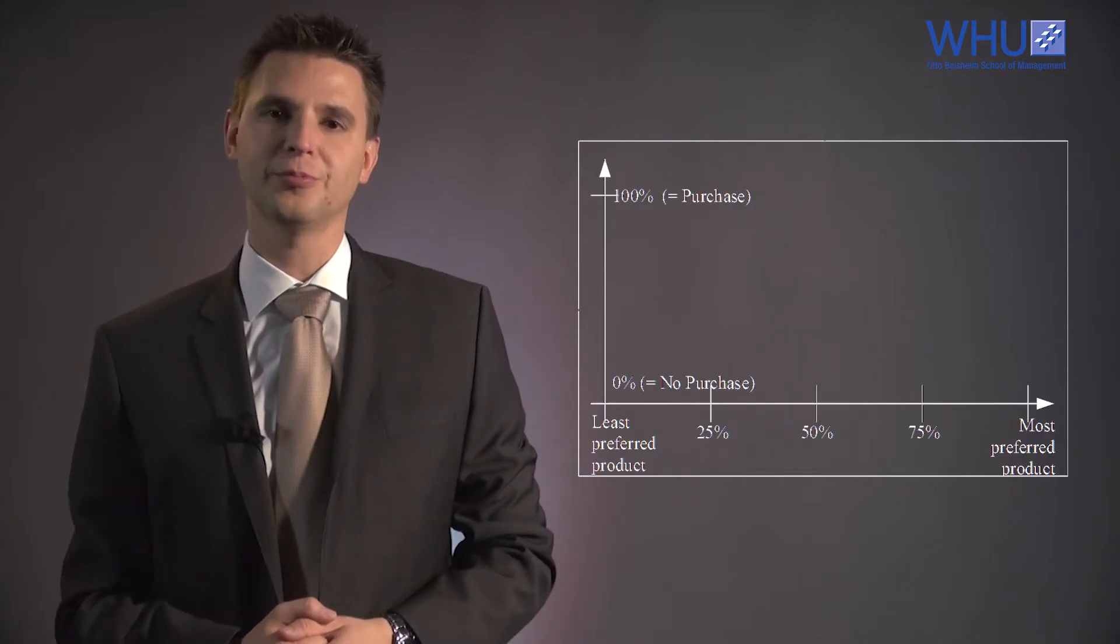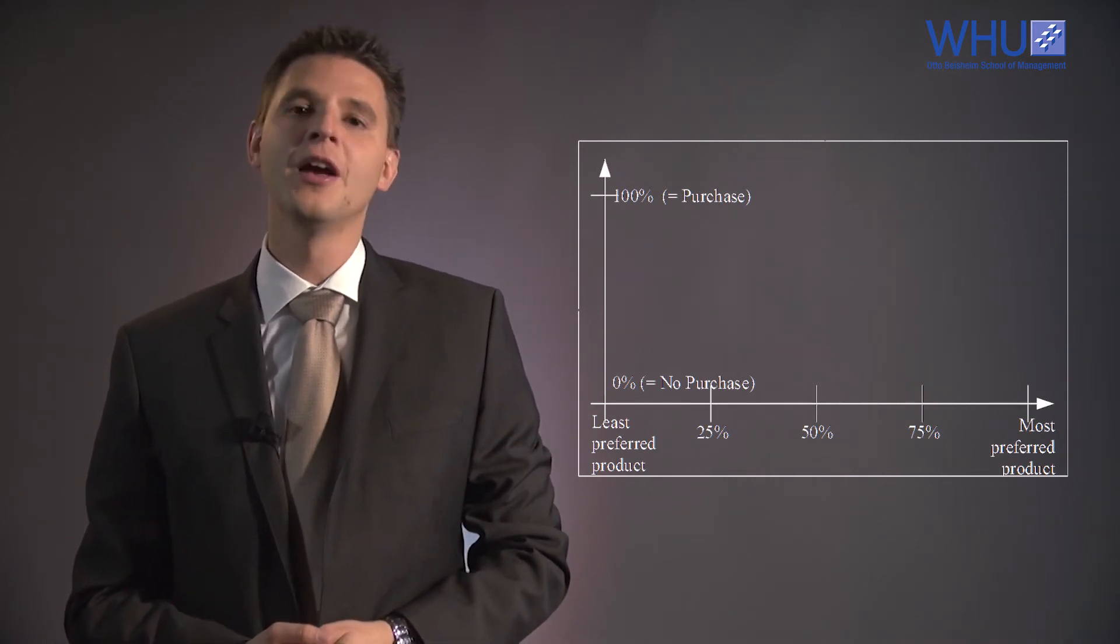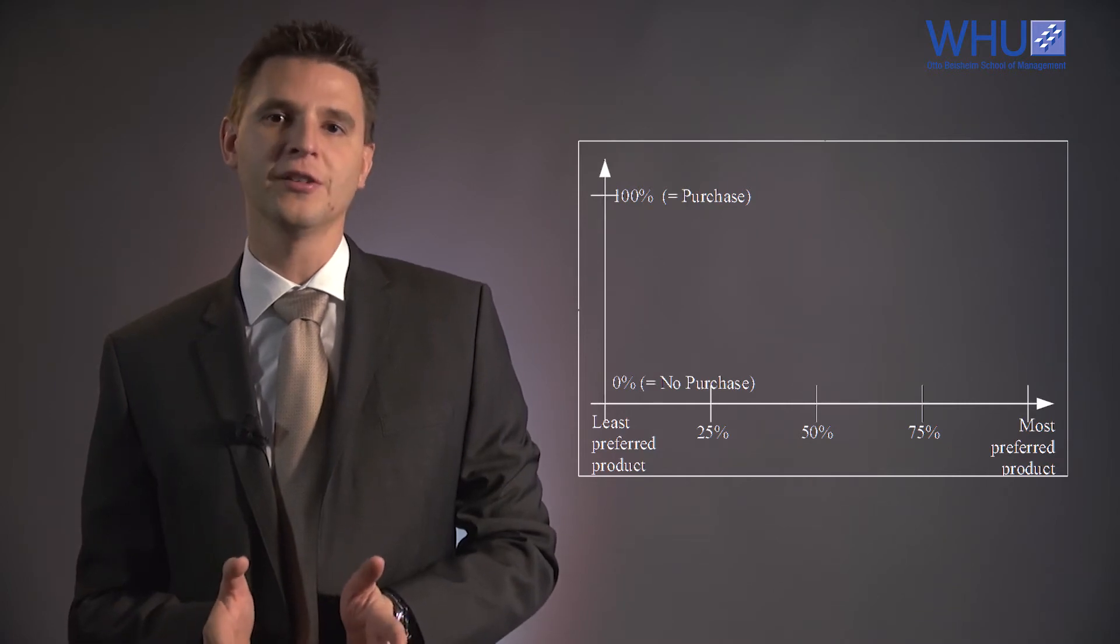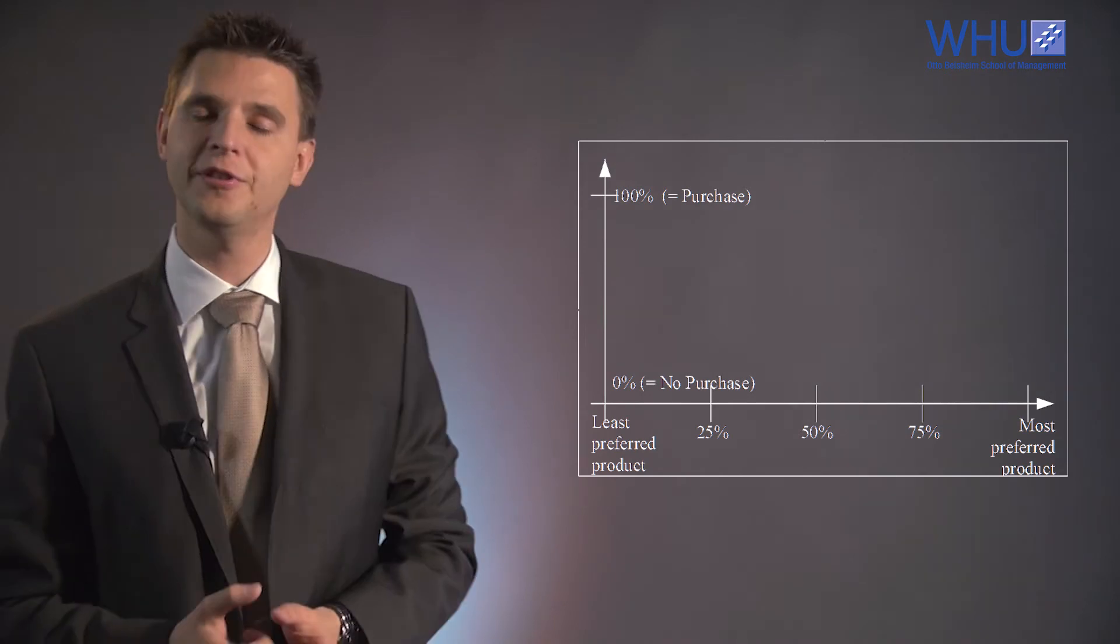The most attractive product is listed on the right-hand side and least attractive product on the left-hand side. Now we choose three products with an equal distance to each other. So the ones here ranked at 25%, 50%, and 75%.